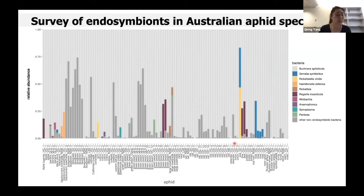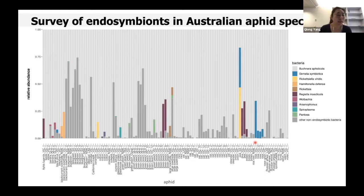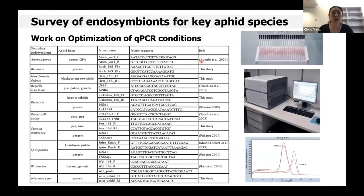Good or bad? The good thing is that all these key aphid pests could be ideal candidates for experimental manipulation in the future. But we are still very curious about the absence of secondary endosymbionts in those key aphid pests in Australia. In addition to the 16S metabarcoding method, we have also been working on the optimization of qPCR diagnostic assays.